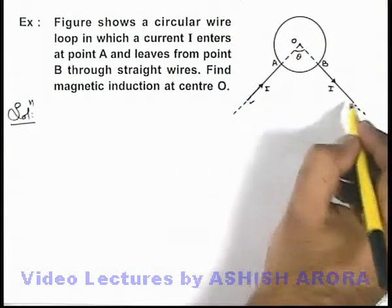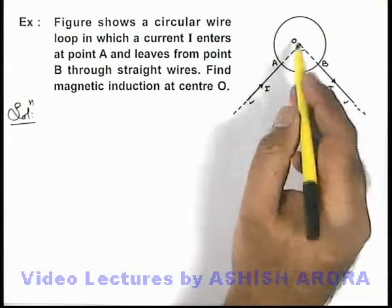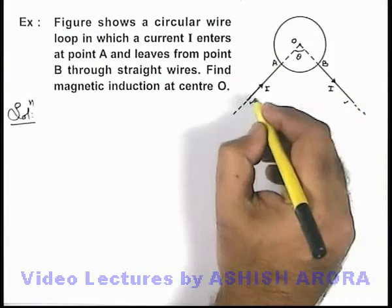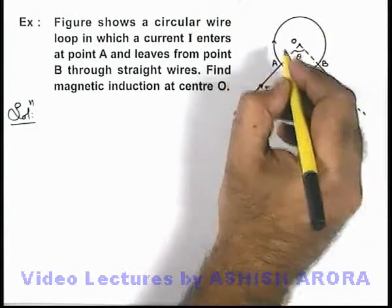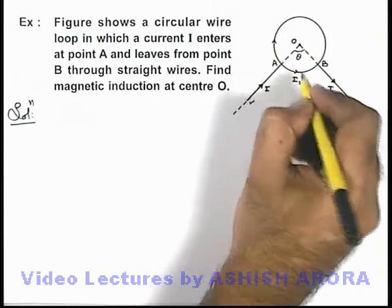Here we can see due to these 2 straight wires no magnetic induction will be produced at point O because these are lying along the line of these straight wires. But when the current enters at point A it'll be divided in 2 parts which we can consider as i1 and i2.